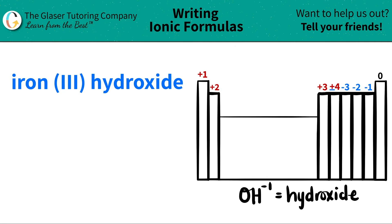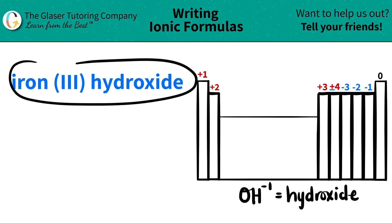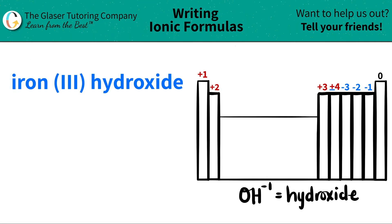Today we are going to be writing the formula for the ionic compound iron 3 hydroxide. So let's work from left to right.